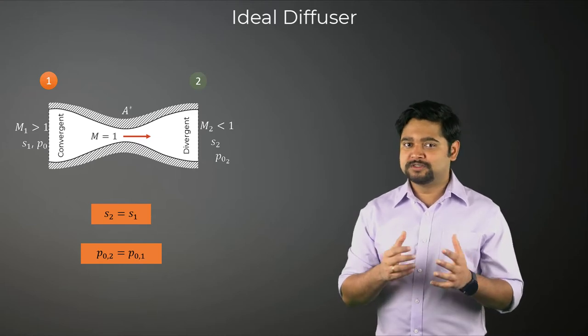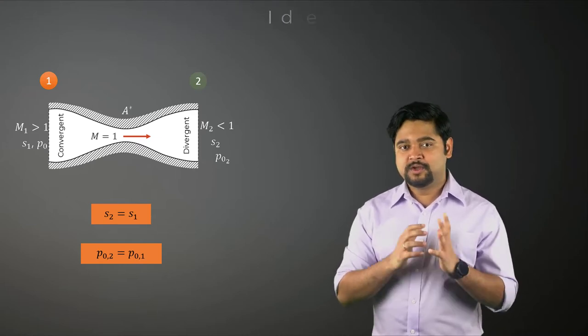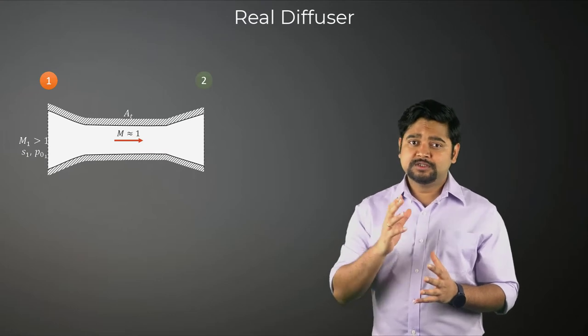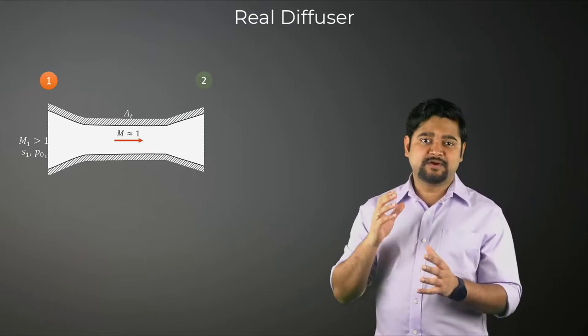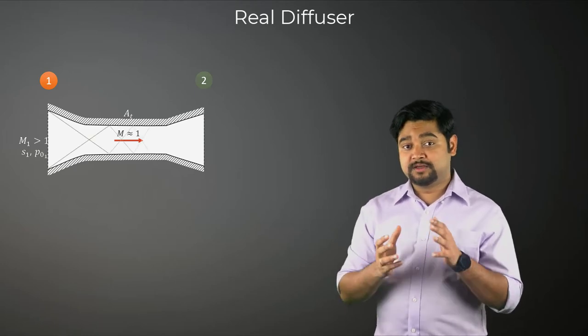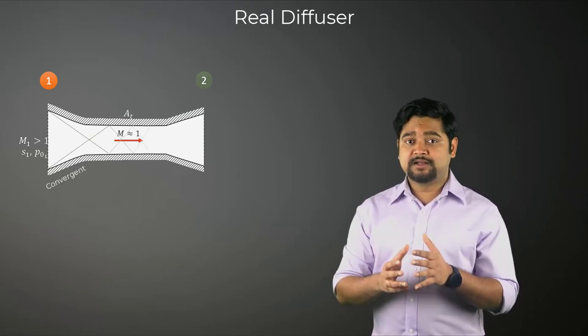So how does an actual diffuser work? Well, an actual supersonic diffuser slows down an incoming flow by a series of reflected oblique shocks in the convergent section and the throat.